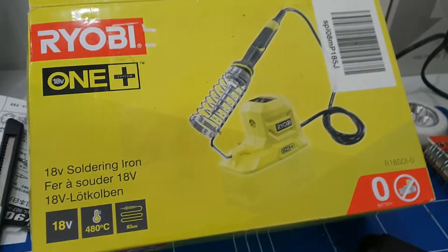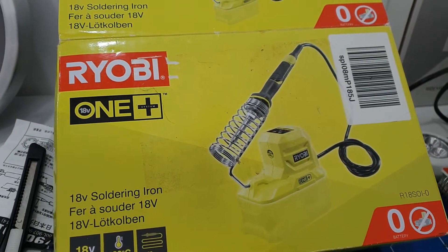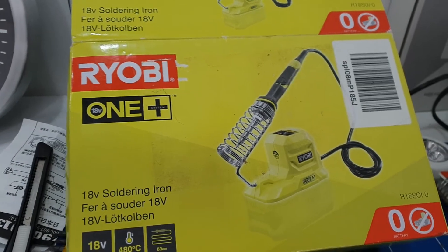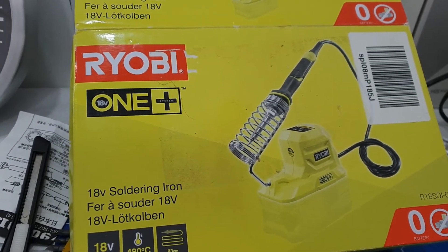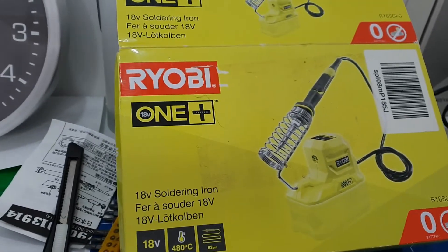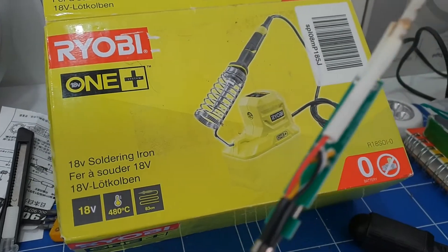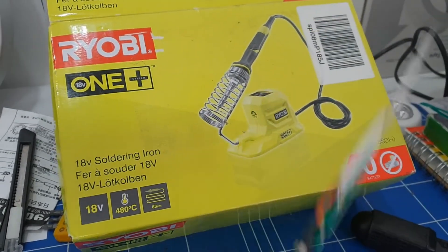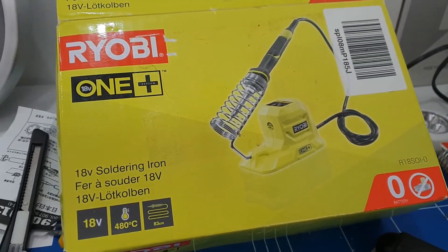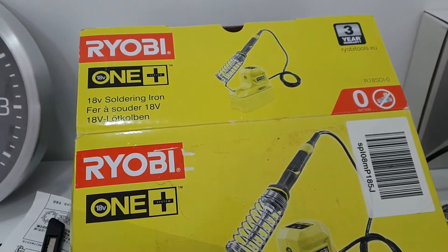The Ryobi soldering iron is a great tool and was one of my favorites for fixing classic bikes and cars and tinkering around. It was fantastic right up to the point it broke, which is really frustrating. I think it lasted about four or five months.